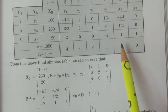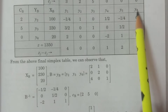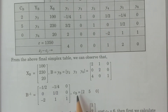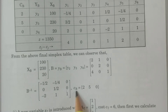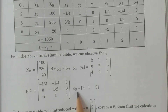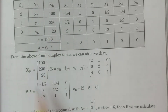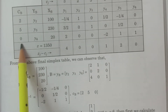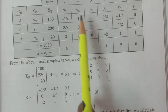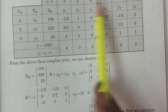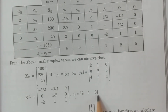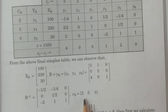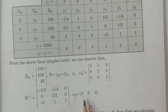The columns y4, y5, y6 in the final table correspond to B inverse. The cost vector cb corresponds to the basis variables y2, y3, y6, with values 2, 5, 0 — the objective function coefficients for x2, x3, and the slack variable respectively.